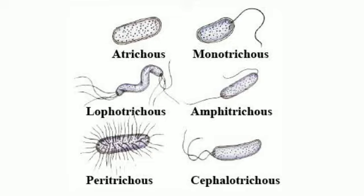The fifth type is cephalotrichous — when a bunch of flagella is present on one end of the bacterium, it is said to be cephalotrichous. Example: Corynebacterium. The last one is peritrichous — when flagella are found on the whole body of the bacterium, they are said to be peritrichous. Examples are E. coli and Salmonella typhi.